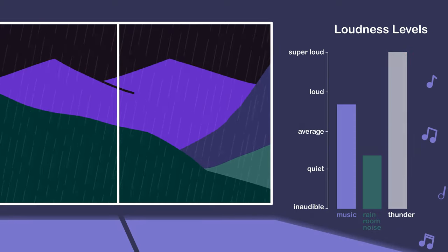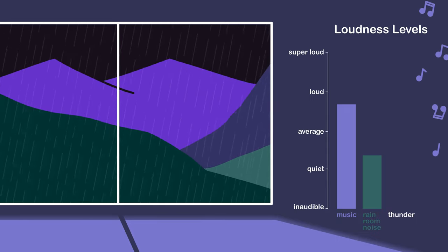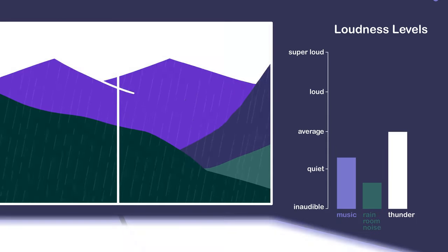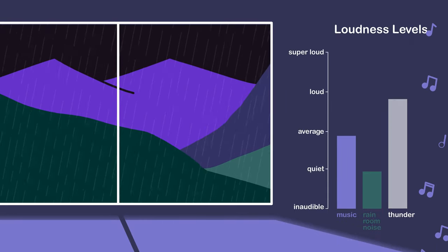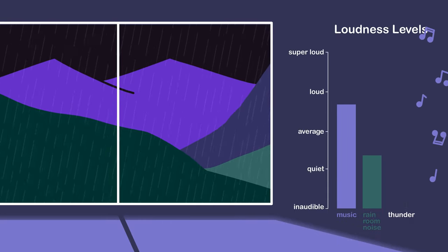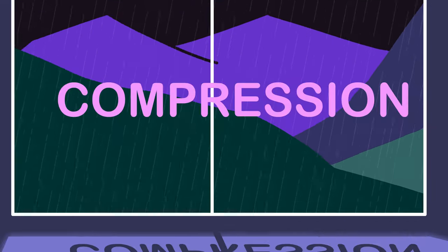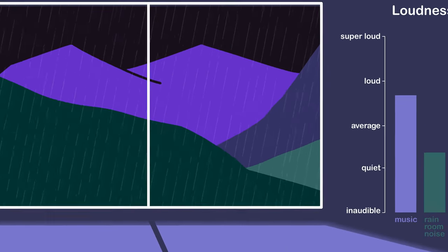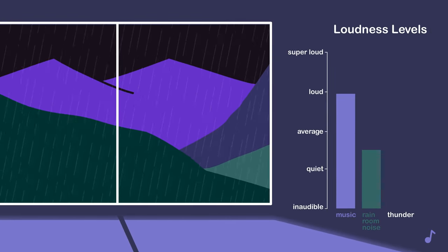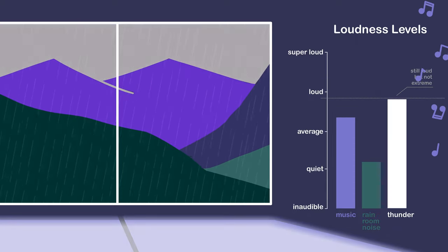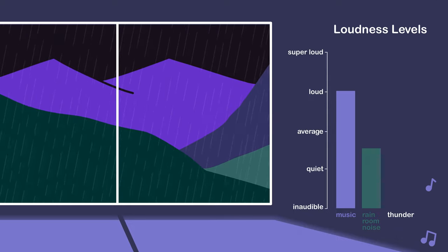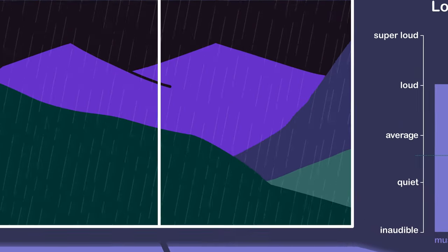So the solution is to lower the volume of the recording, but only when the thunder occurs. By doing this, we've made the loud parts of the recording quieter and brought them closer to the average volume of the recording. This is called compression. After we've compressed the signal, we can safely increase its volume, so that now the music is loud and clear and the thunder is not overwhelming anymore. As a side effect, we've also made the rain and the other ambiance louder as well, but this is the price we have to pay. That's it — that's compression.